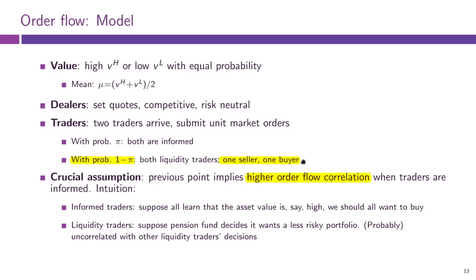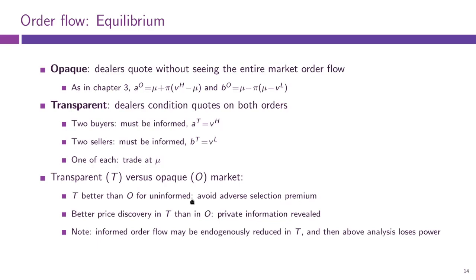The big idea here is that we will have higher correlation of the order flow when traders are informed. Because if V is high, both market orders will be to buy the asset; if V is low, both orders will be to sell. While orders coming from liquidity traders are less correlated with the true value, and less correlated with one another. We model this in a very simplified way, but you can model it more honestly and get the very same conclusion.